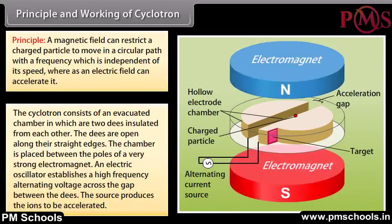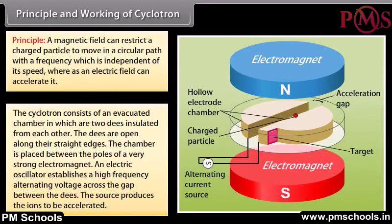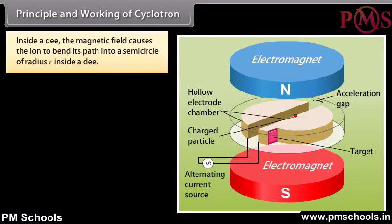An electric oscillator establishes a high-frequency alternating voltage across the gap between the dees. The source produces ions to be accelerated. Suppose an ion with positive charge Q and mass M is at the center of the gap when D1 is at negative potential with respect to D2. The ion is accelerated across the gap by the electric field towards D1. Inside a dee, the magnetic field causes the ion to follow a semicircular path of radius R.